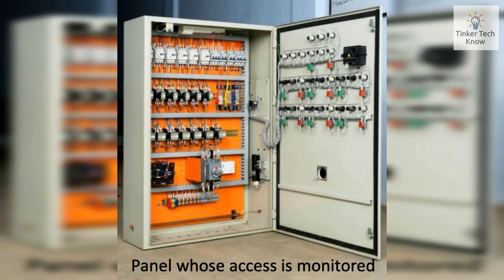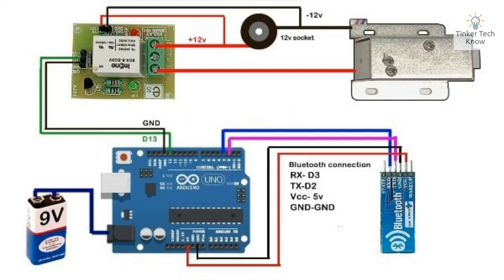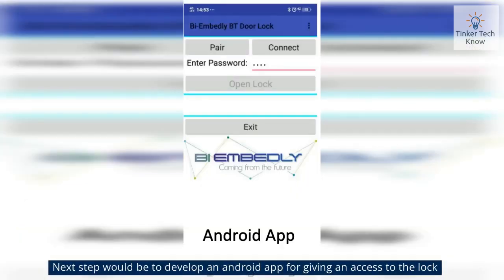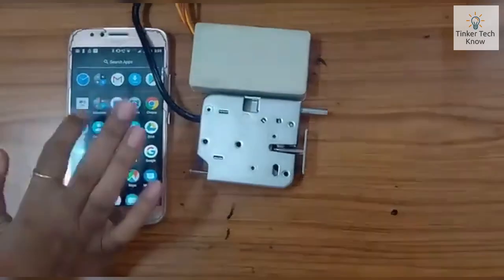Let us consider this example: an industrial panel whose access is to be monitored in medium or large-scale factories. After selecting the appropriate lock for the application, one needs to develop the hardware system for interfacing the BLE lock with a microcontroller and BLE module. The next step would be to develop an Android app for granting access to the lock. Here is a demo video.